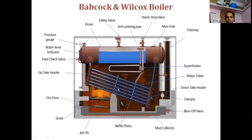Steam is then developed. As the pipes are in an inclined position, the density of steam is lighter compared to water, so the steam developed escapes and passes through the uptake header, and gets collected in the steam space — the white-colored space you can see here where steam is collected.